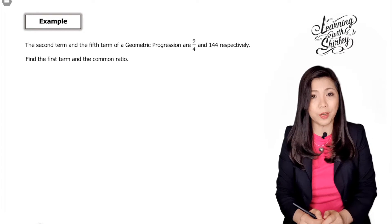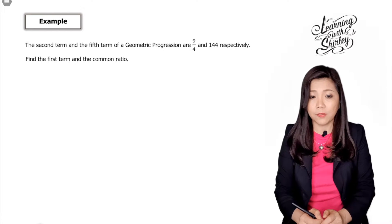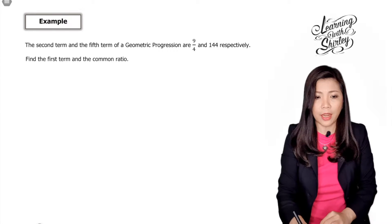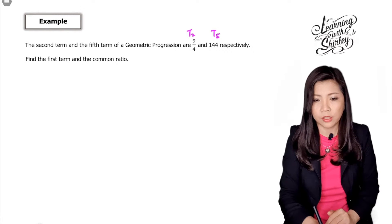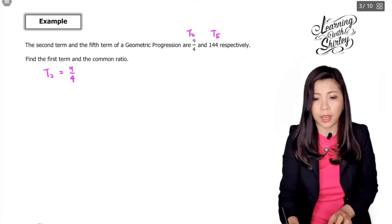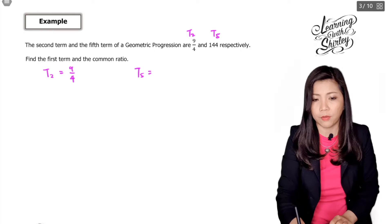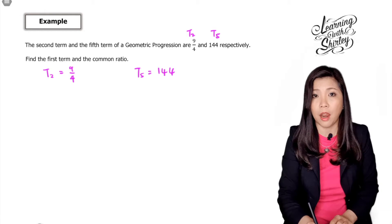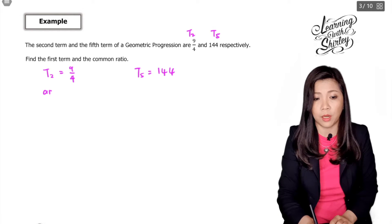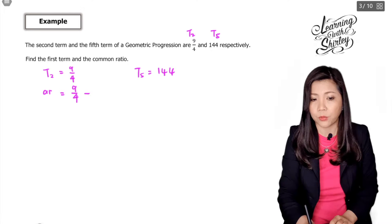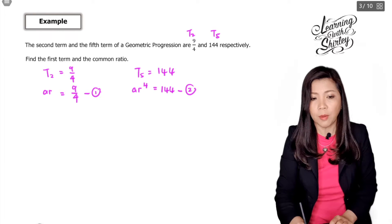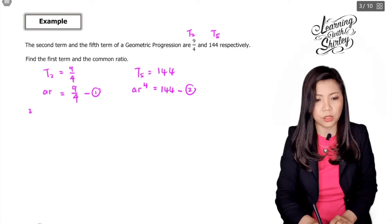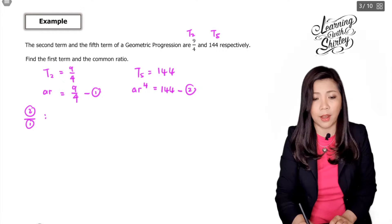The second term and the fifth term of a geometric progression are 9/4 and 144 respectively. Find the first term and the common ratio. Given t2 and t5, we substitute into the tn formula. So t2: a times r to the power of 1 equals 9/4 — this is equation 1. And t5: a times r to the power of 4 equals 144 — this is equation 2. We divide equation 2 by equation 1 to eliminate a and find the value of r.